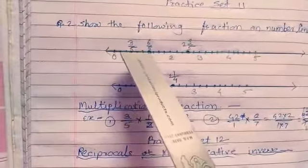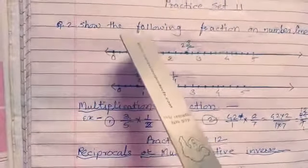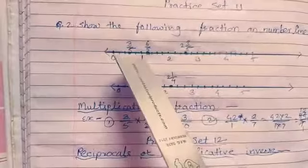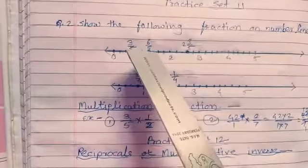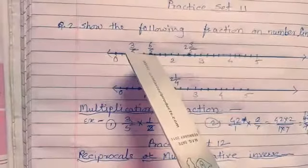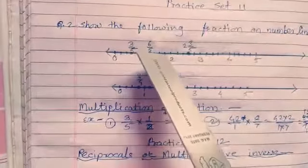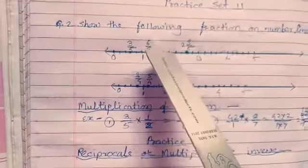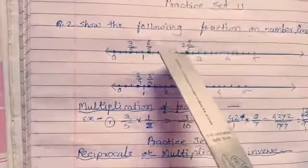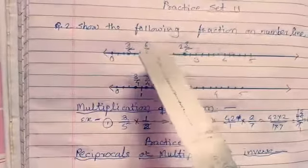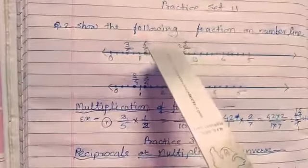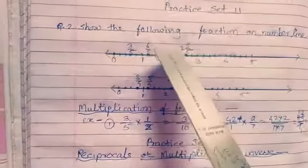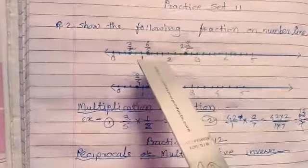Continuing to count: 4, 5 — here is 6 upon 5. Then 7, 8, 9, 10, 11, 12. The next complete number is 2 — 2 is completed.